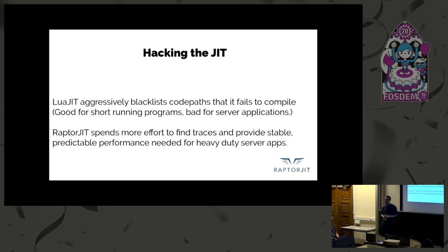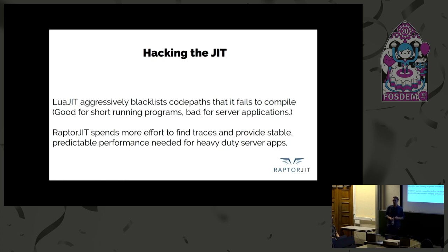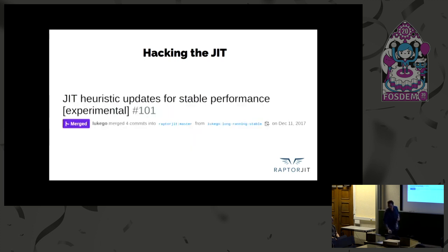LuaJIT aggressively blacklists code paths that fail to compile, which favors short-running programs. Our target programs are all long-running. So as a policy change, we spend way more time trying to find good traces, and we're okay with that — we want to find the best traces for the program because we know it's going to run for a long time. As a first step, we updated the JIT compiler's heuristics for trace selection to match our target workloads.